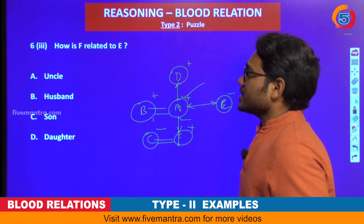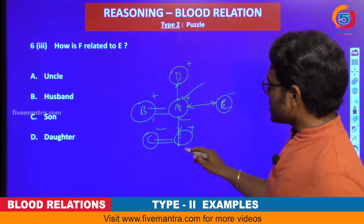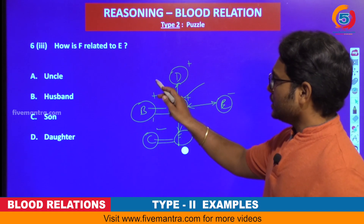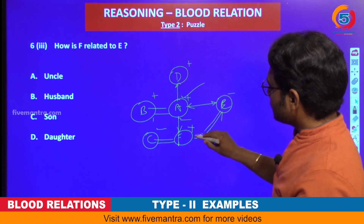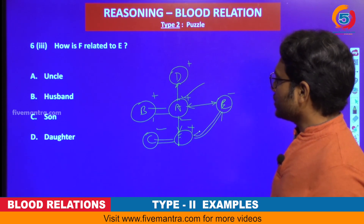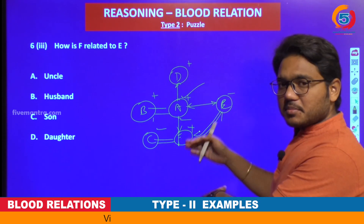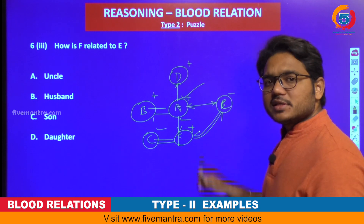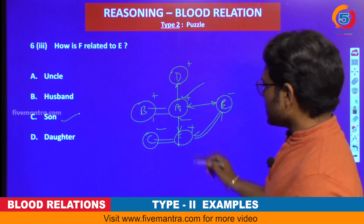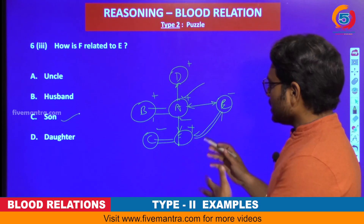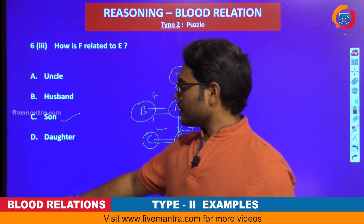Next part: how is F related to E? Where is E in the tree? F is related to E — E is the mother of F. Since F is a male, F is the son of E.